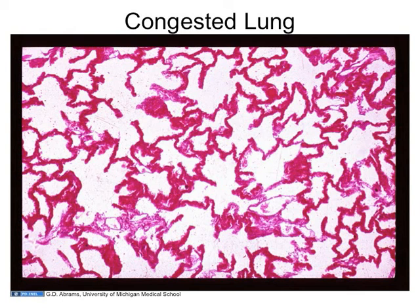Here is a case of very acute left ventricular failure. The heart didn't stop, but it just couldn't handle the blood coming to it, and the patient died relatively soon. What you see is a very high power view of air spaces with very distended capillaries in all of the alveolar walls. That happens within a matter of minutes — certainly hours easily — because the pulmonary capillaries are sort of floating in air, so when there's back pressure they really get engorged.